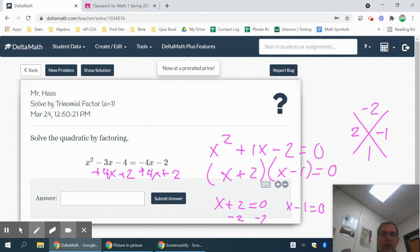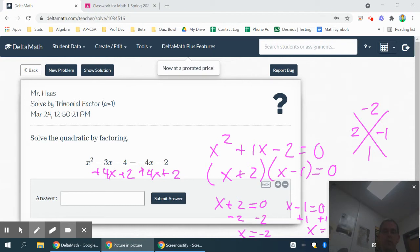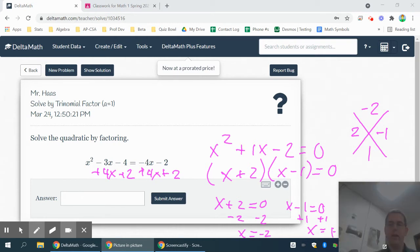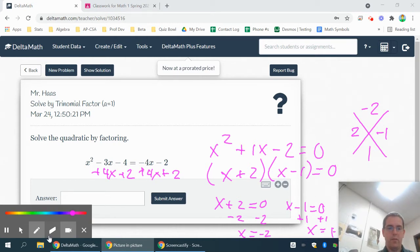So I can subtract x from both sides giving me an x of negative 2. On this one I can add one to both sides. All that's basically doing is the sign is switching to get my final answer. That gives me a value of x is 1 and that's going to give me my answers there.